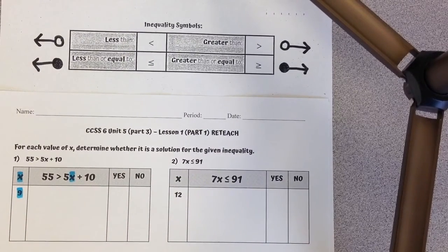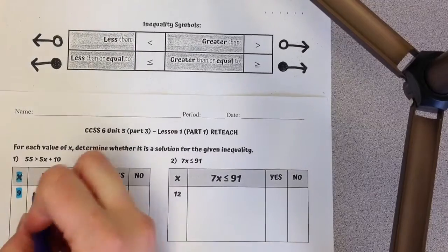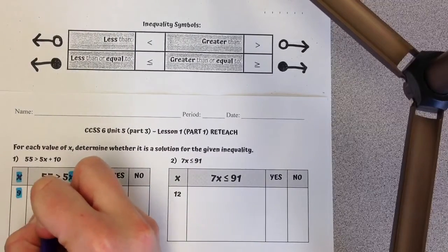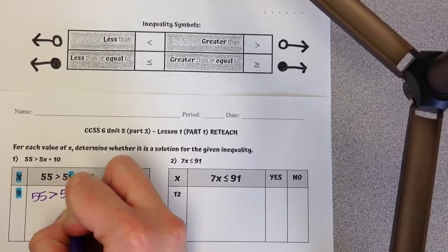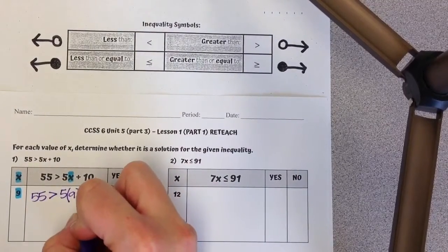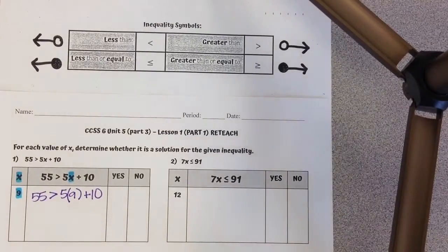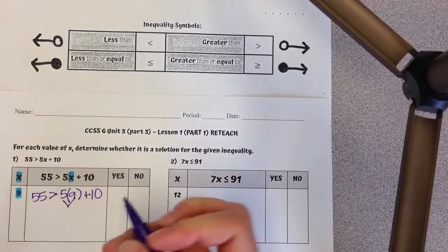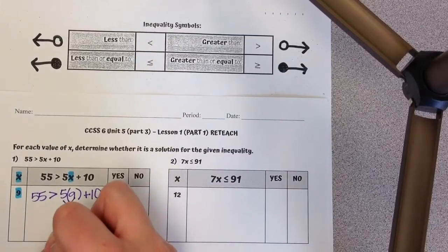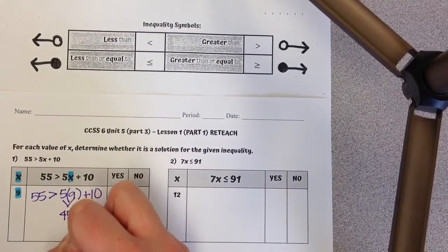So I know I'm plugging this 9 in for x. I'm going to rewrite this as 55 is greater than 5 instead of x, I'm going to put that 9 plus 10. I'm going to use order of operations to find the value. 5 times 9 is 45, plus 10.